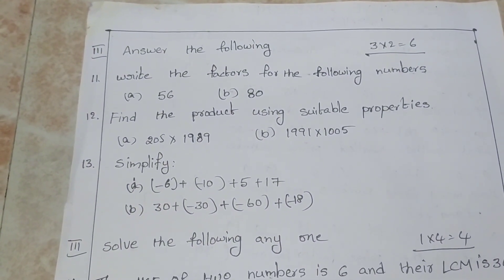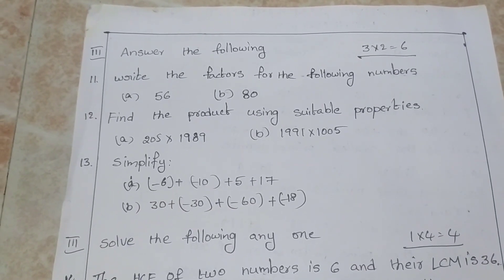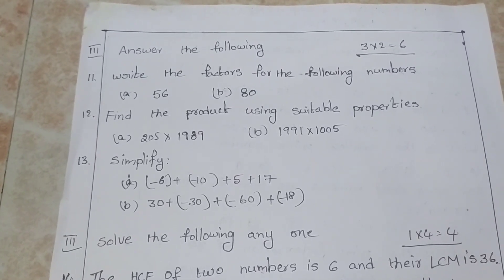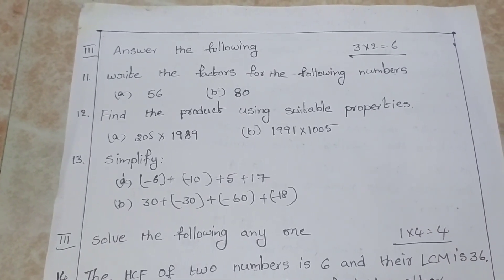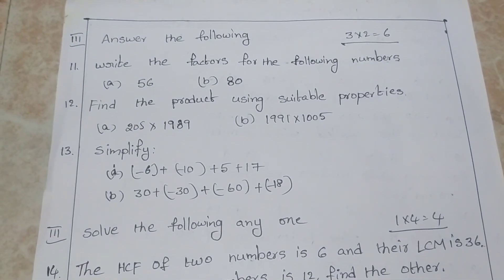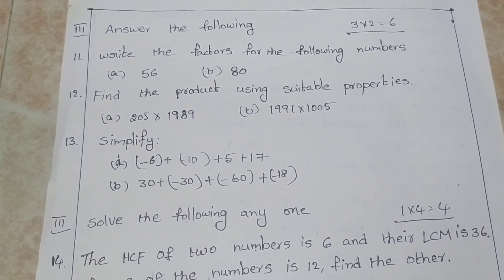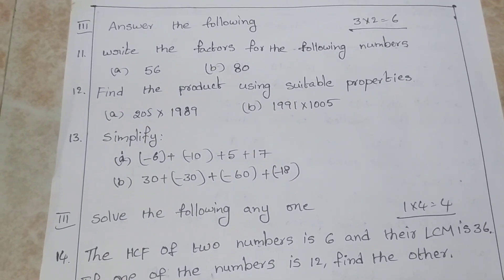Answer the following. Write the factors for the following numbers: 56, 80. Find the product using suitable properties: 205 × 1989, 1991 × 1005.